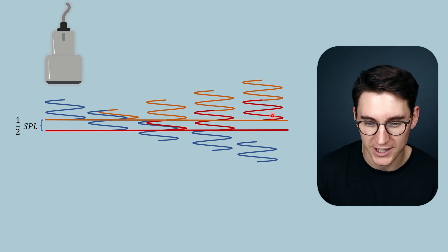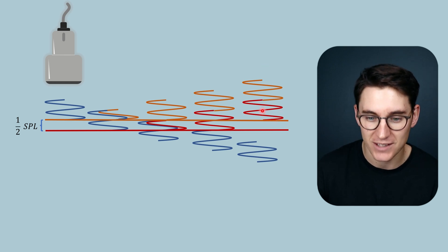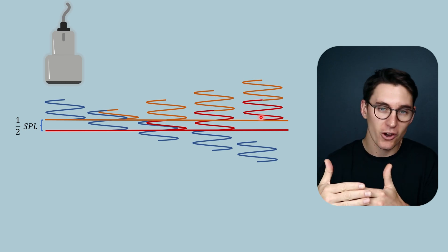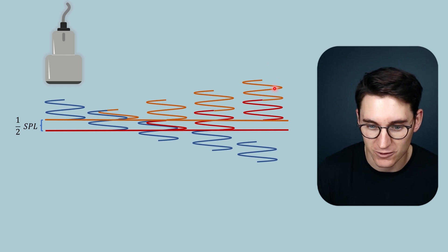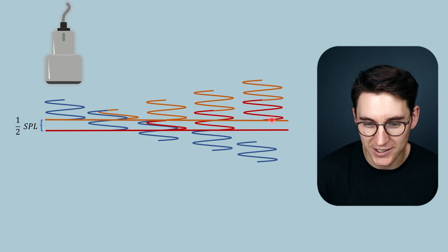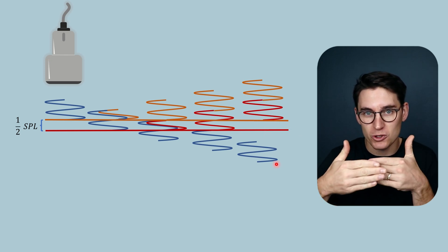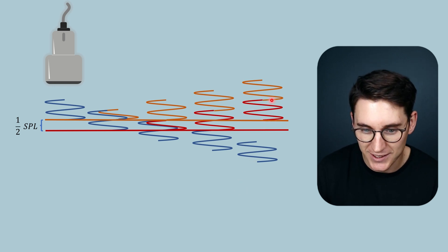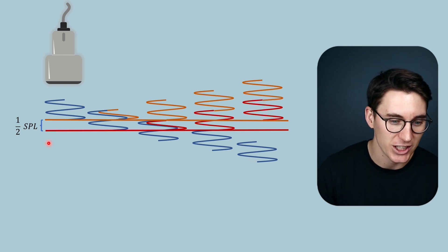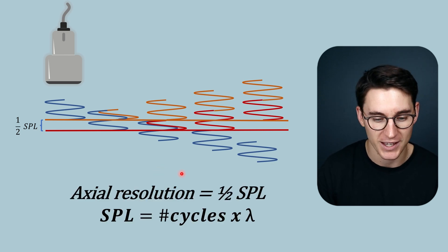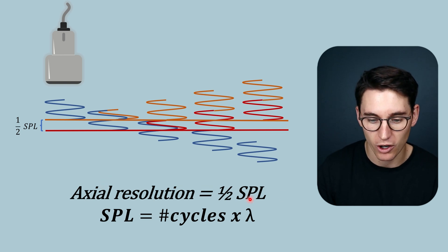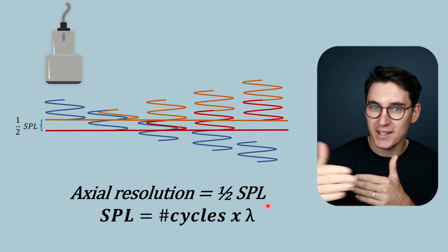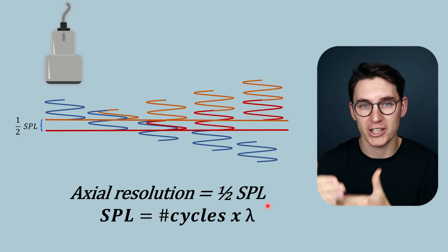There is no space between the first echo and the second echo. When this information heads back towards our ultrasound transducer, it will not be able to differentiate the first pulse echo from the second pulse echo, and it will plot this information as one solid line. The ultrasound machine is unable to resolve these two tissue boundaries because they are too close together. This shows us that the limit of axial resolution is half of the spatial pulse length: any two objects closer than half a spatial pulse length within the axial plane cannot be differentiated.